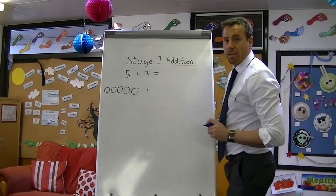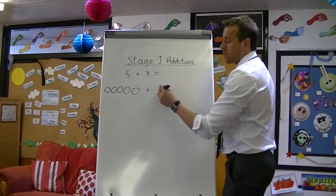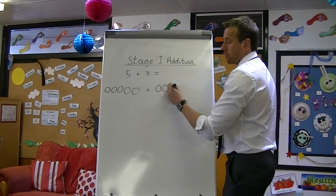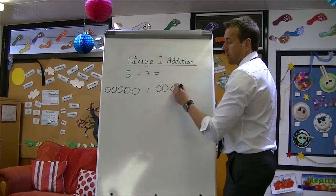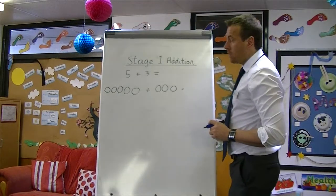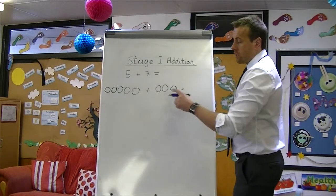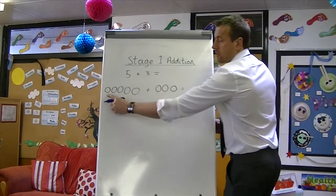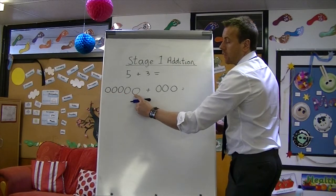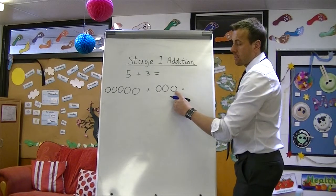Then encourage them to write the addition symbol. And then 3: 1, 2, 3. Encourage them to write the equal sign. And then to count from the start to the end: 1, 2, 3, 4, 5, 6, 7, 8.